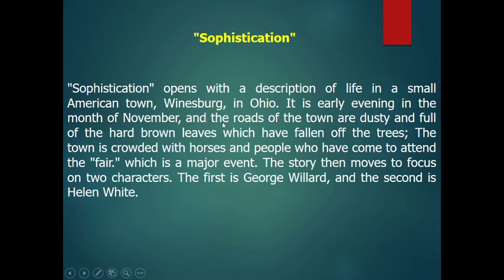The roads of the town are dusty and full of hard brown leaves which have fallen off the trees. The writer chose the month of November — not summer, not spring, not winter — autumn. Autumn as a season refers to many negative things. The leaves which are brown and falling also refer to the protagonists and give information about what will happen in the story, especially concerning the main characters. The town is crowded with horses and people who have come to attend the fair, which is a major event.